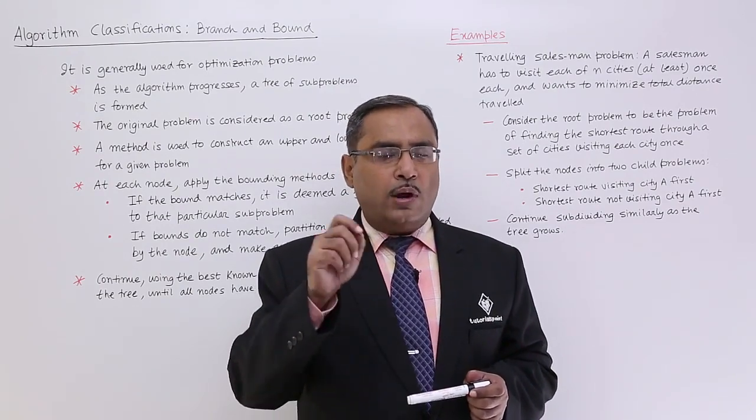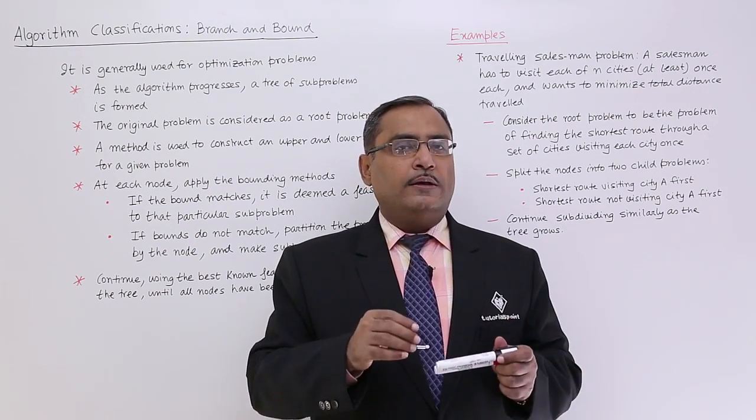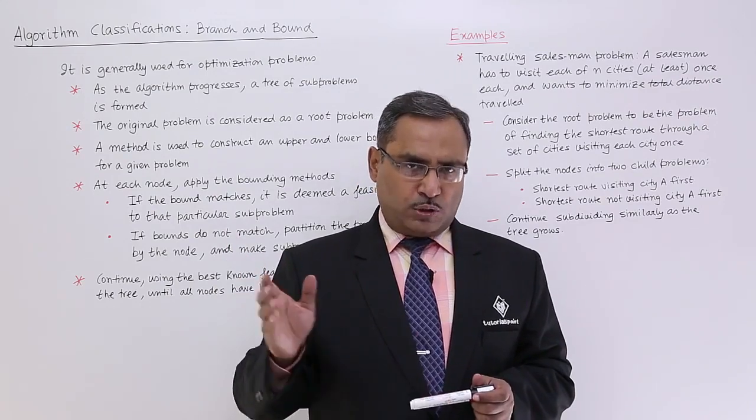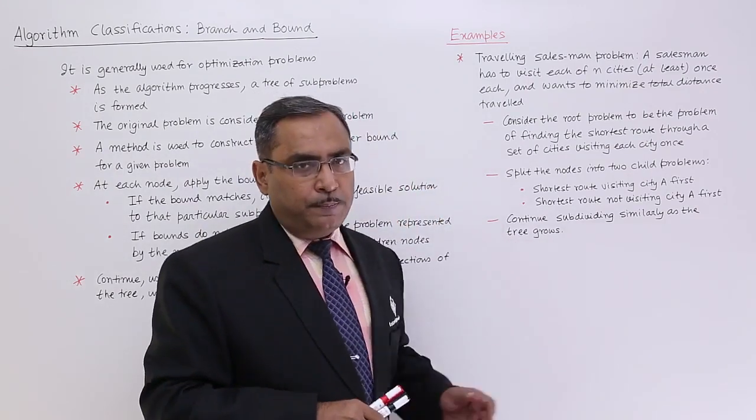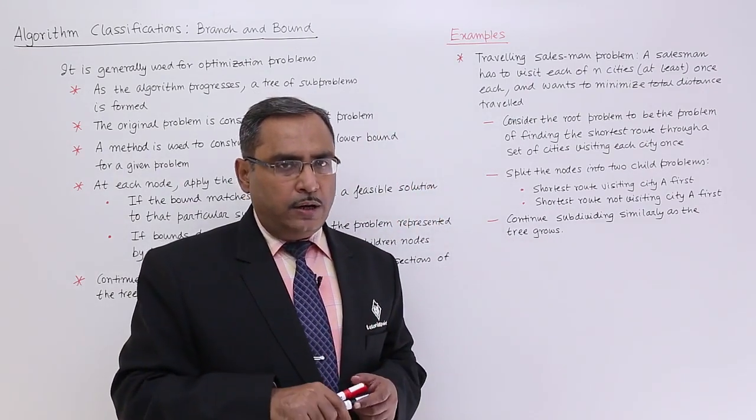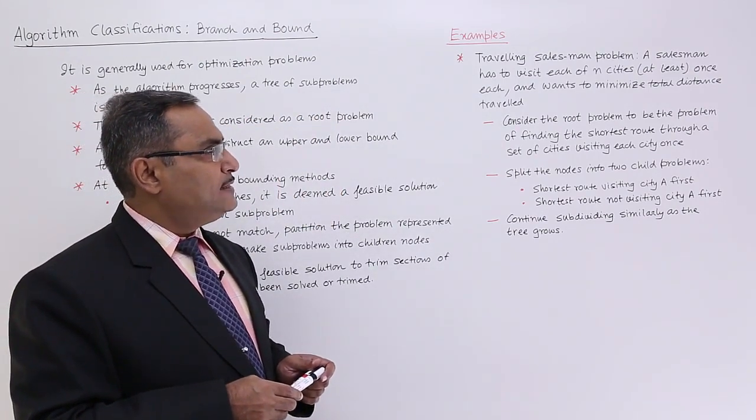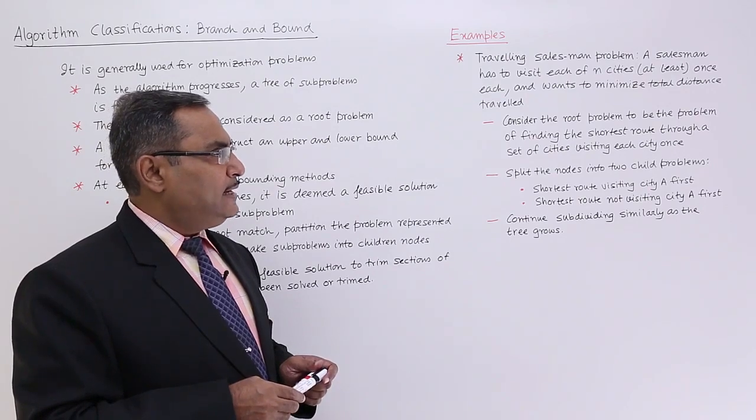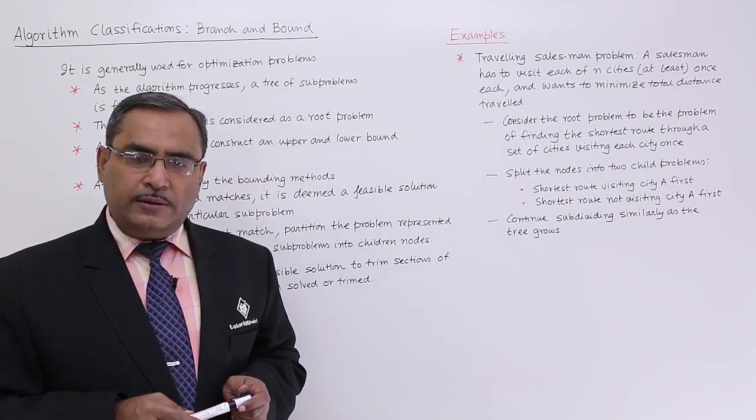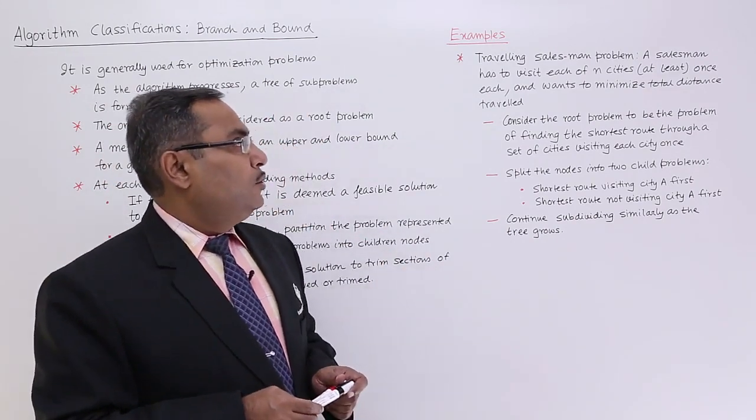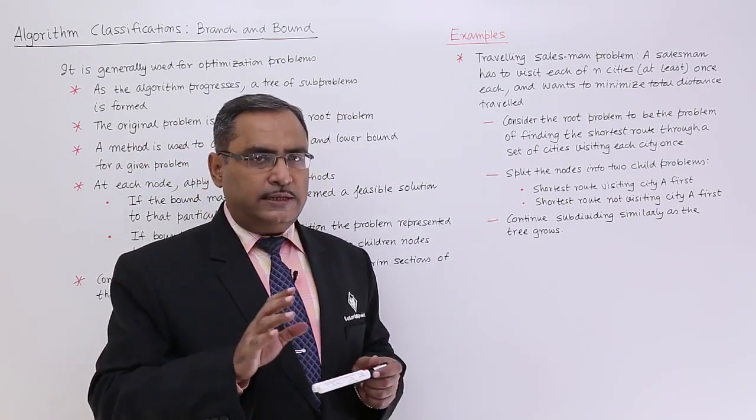we shall have to find which is most promising so that the desired goal node or goal arrangement can be reached using fewer moves. So that will be branch and rest other possibilities will be bound. Now let us come to this particular example to have a better idea on this branch and bound algorithm. Travelling salesman problem: a salesman has to visit each of n cities at least once each and wants to minimize total distance travelled